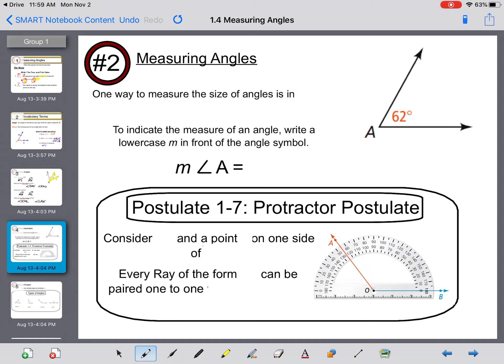One way to measure the size of angles is in degrees. To indicate the measure of an angle, you write a lowercase m in front of the angle symbol. So the measurement of angle A is equal to 62 degrees.